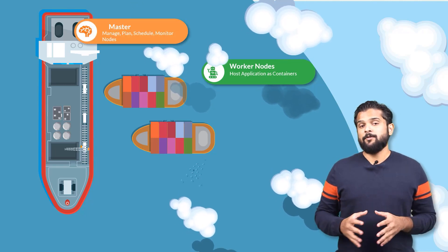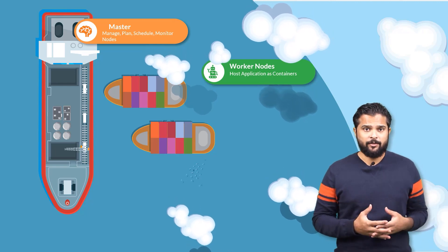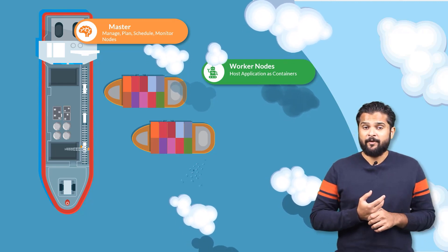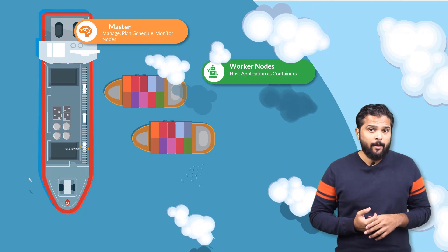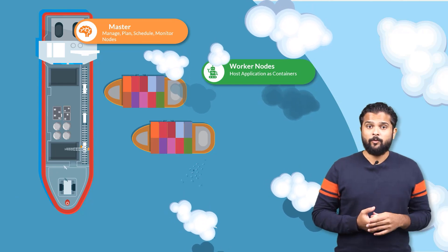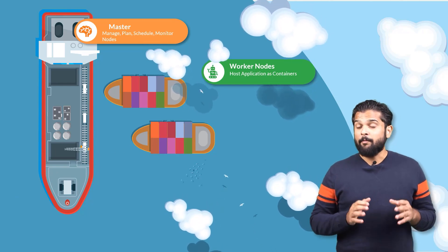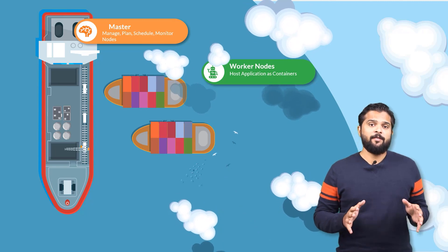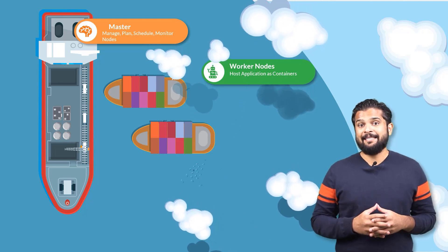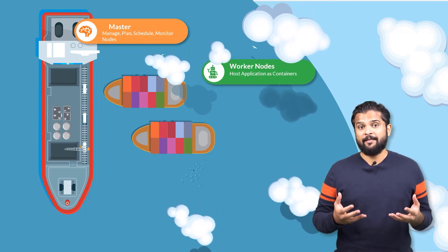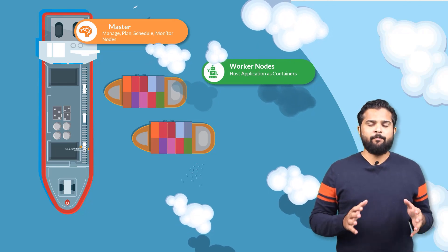The master node is responsible for managing the Kubernetes cluster, storing information regarding the different nodes, planning which containers go where, and monitoring the nodes and containers on them. The master node does all of these using a set of components together known as the control plane components. We will look at each of these components now.